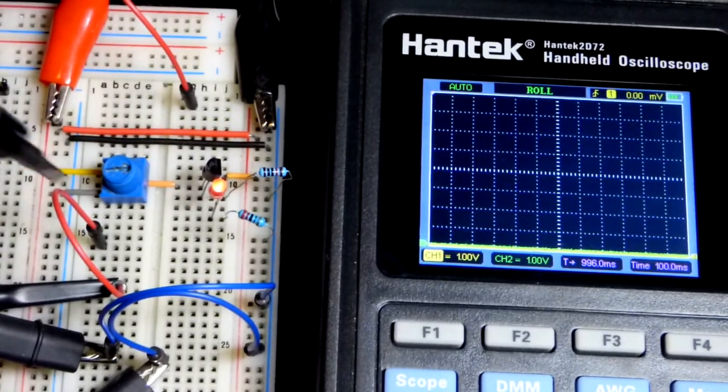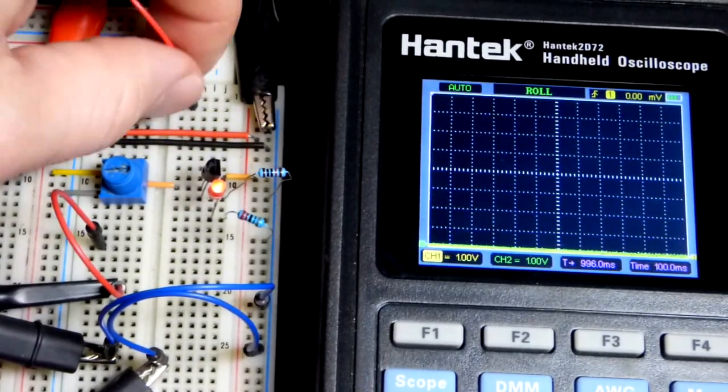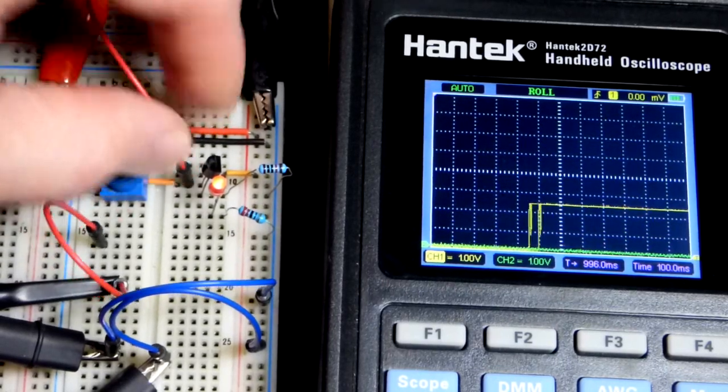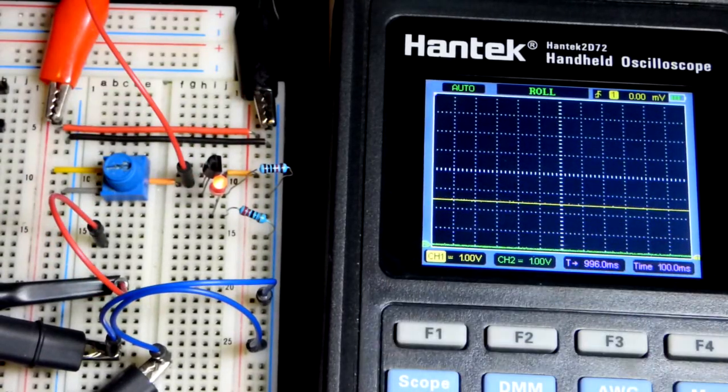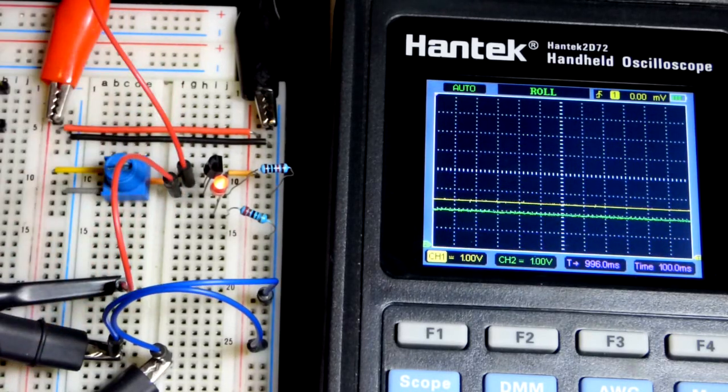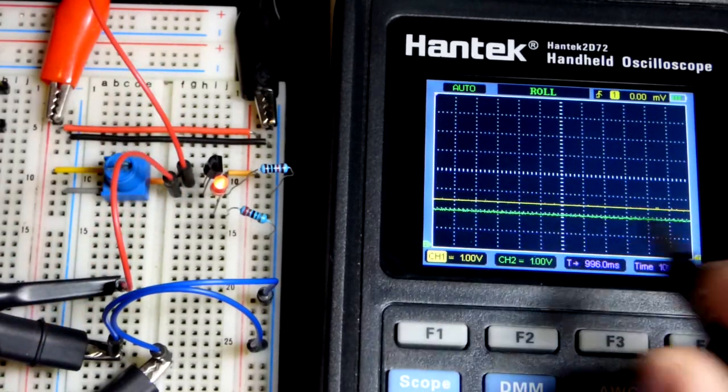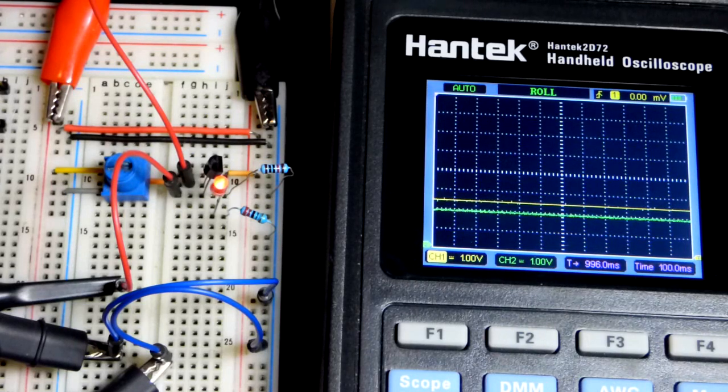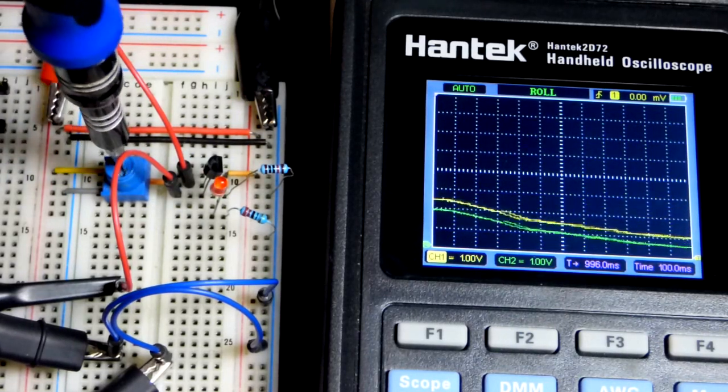The trim pot can set a voltage anywhere from 0 to 5 volts. We'll see that we have somewhere about 2.5 volts since it's halfway. The output which powers the LED is about 0.6 volts less than that. It's a voltage follower because whatever